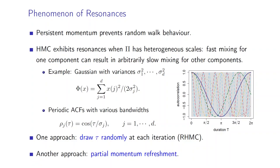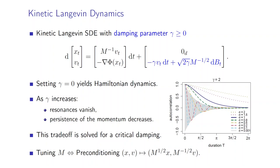We are going to use here another approach built upon partial momentum refreshments. To build our algorithm, we leverage the so-called kinetic Langevin SDE with respect to a damping parameter γ that controls how fast the refreshments of the velocity will occur. By setting this friction or damping parameter γ to zero, we just recover Hamiltonian dynamics. As this damping parameter γ increases, the phenomenon of resonances vanishes, but at the same time, persistence of the momentum decreases, and therefore efficiency of sampling.